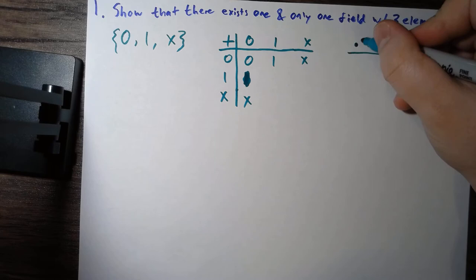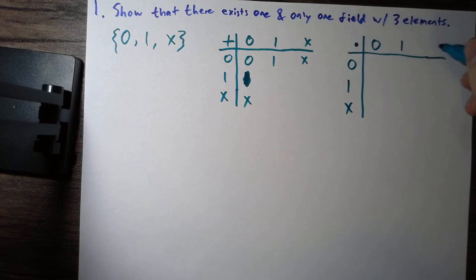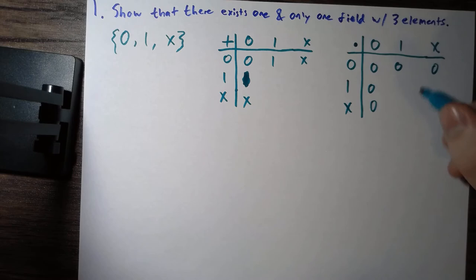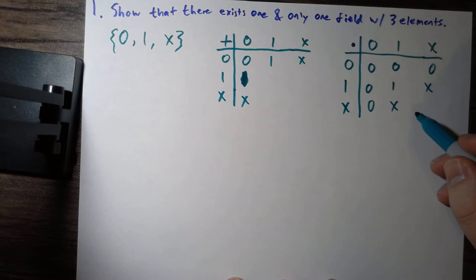What about multiplication? Let's see, what can I say about multiplication? We know that zero times anything has to be zero in a field. One is a multiplicative identity. So one times anything must be itself.